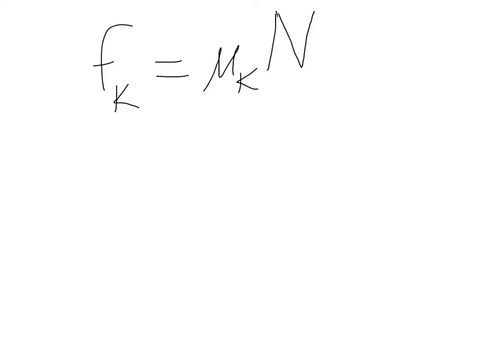This equation is different from the equation for maximum static friction. The F_s max equation gives us only the maximum possible static friction force — it's quite possible that static friction would be a number less than that, depending on the other forces on the object. However, if we're given that the object is sliding, we know the kinetic friction force will be exactly the value given by this equation.